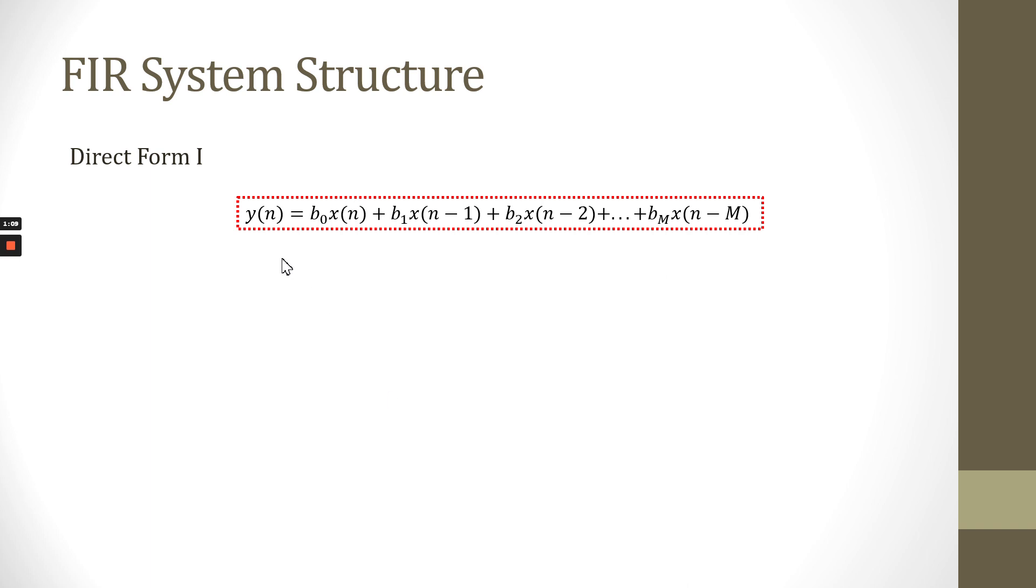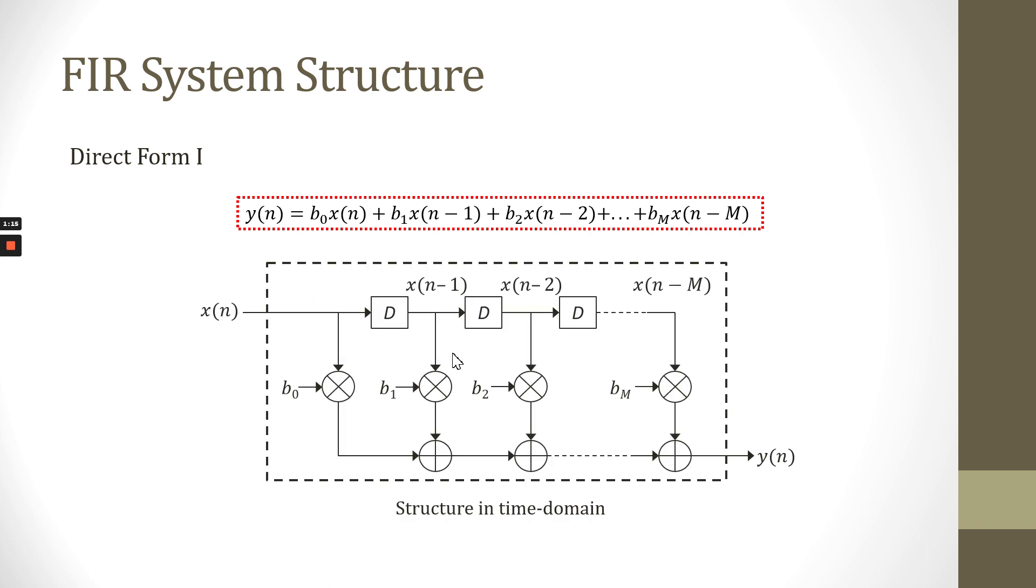Based on the equation of output FIR in Time Domain, this is the direct form-1. This is the current input and this is the current output y(n) on the right. In the middle, we have the structure where D is the delay unit time for time domain. If we multiply this current input with this delay unit time, it will produce x(n-1). This is the past input. At this path, this is the current input. This is the multiplication symbol, so we multiply this coefficient b0 with x(n) and it will produce b0 x(n).